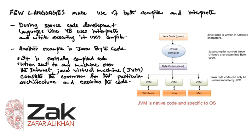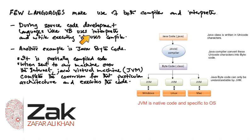A few languages make use of both compiler and interpreters. For example, you might have used VB. During source code development or editing, languages like VB use an interpreter. Whenever you write a statement and hit enter, you might see those red, green, or blue wrinkled lines which tell you about any error or anything that needs your attention, because as soon as you hit enter, the statement is being interpreted. And when you execute the program, it uses the compiler and produces a .exe executable file.